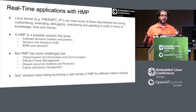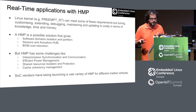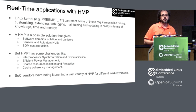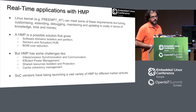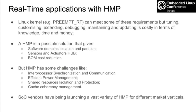With hybrid multiprocessing, you can have complete isolation and partitioning of the software domains, sensors and actuators hubs, and even a reduction of BOM costs. But some challenges will come up: inter-processor synchronization and communication, efficient power management, shared resources isolation and protection, and cache coherency management — where the remote processor can be accessing outdated data.